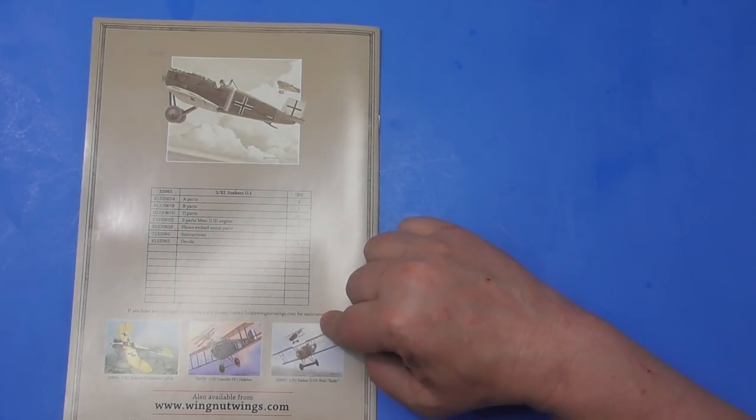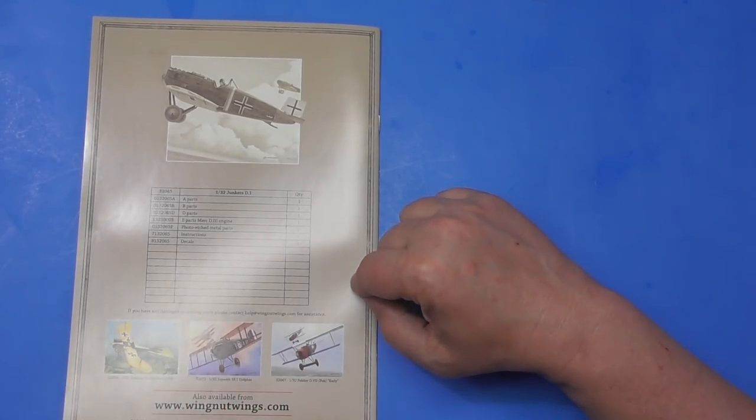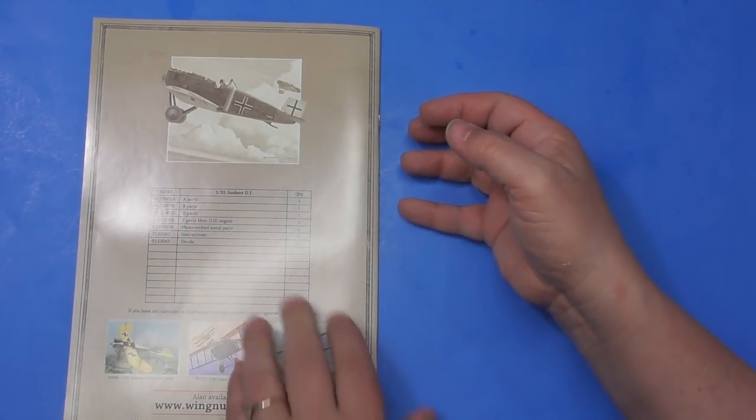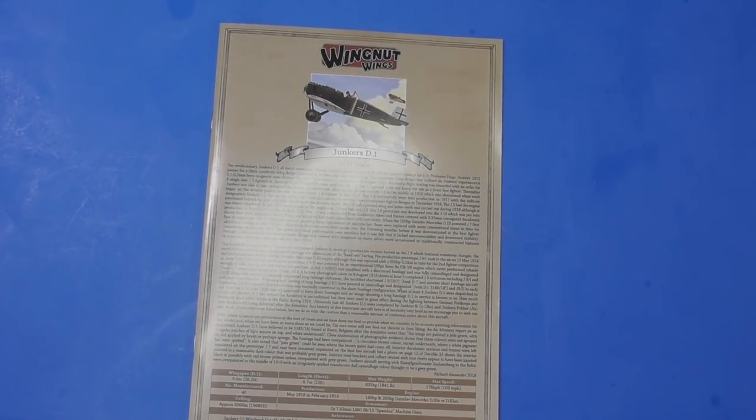And here's some other things available from Wing Nut Wings. Sopwith Dolphin looks nice too. But I think if I do have one, it'll be the Albatross.